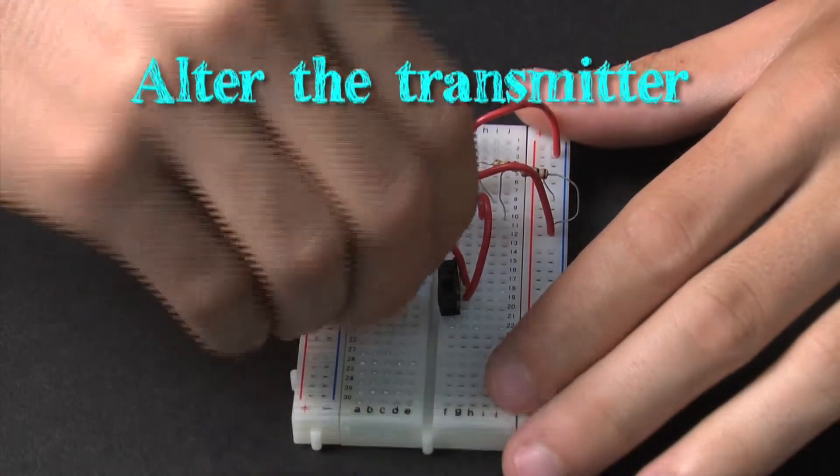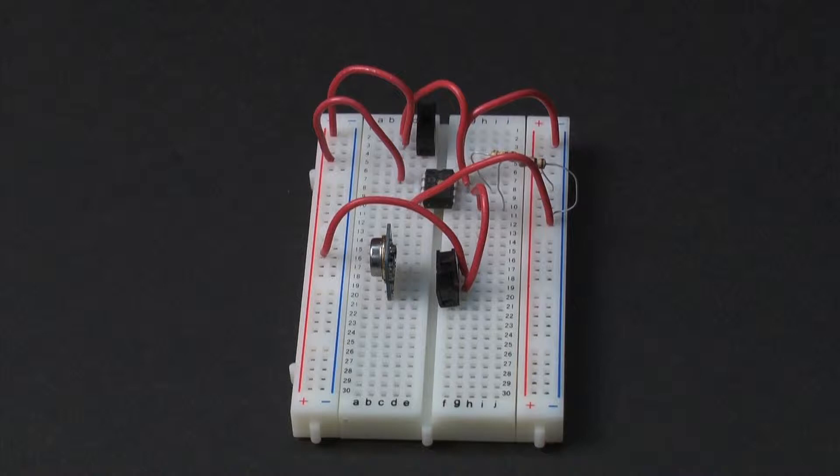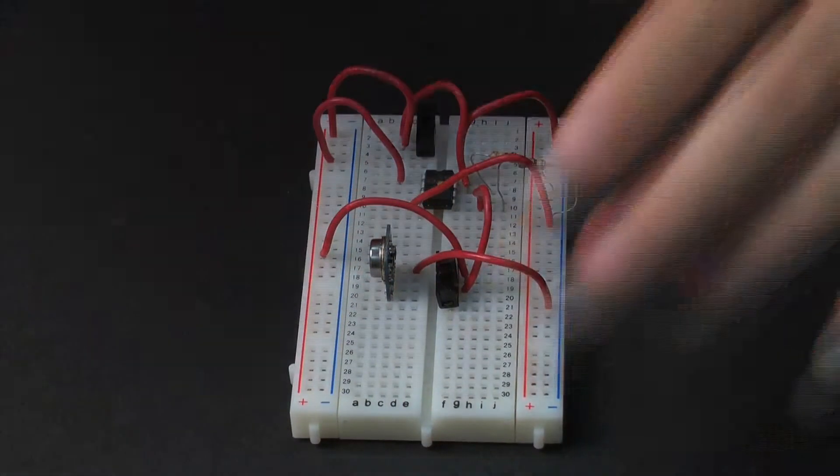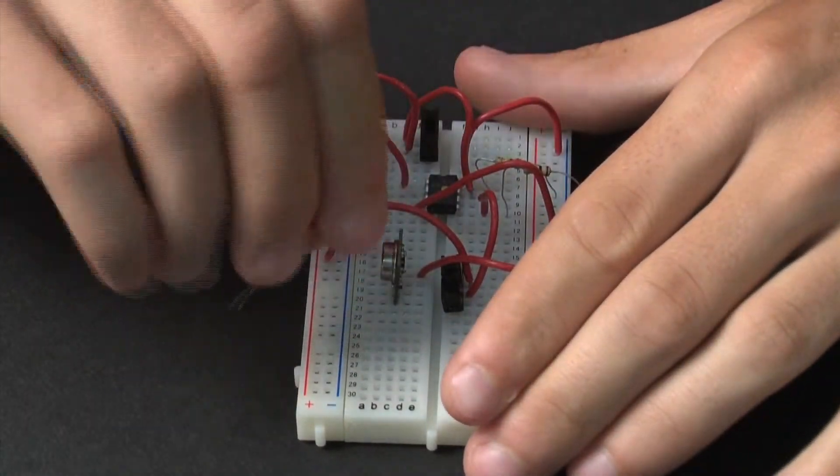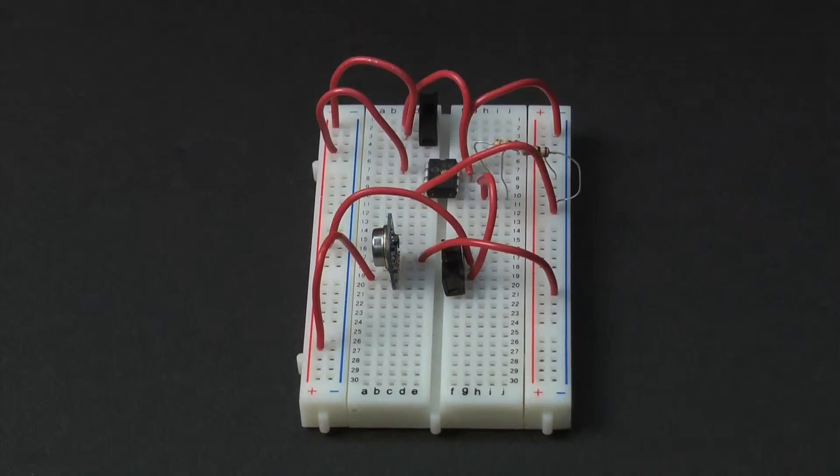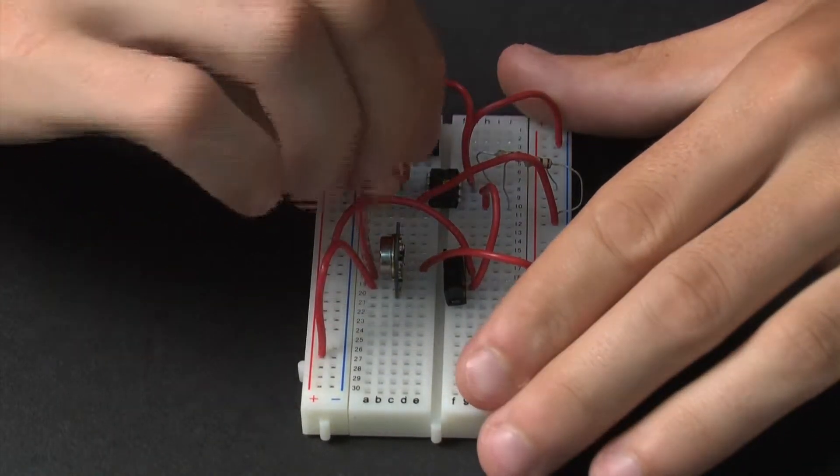Then, you must alter the transmitter by adding the RF transmitter chip. The signal that the encoder chip outputs is then connected to the RF transmitter. The RF transmitter then uses power from the power rail connections to convert that electric signal into an RF signal.